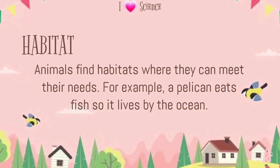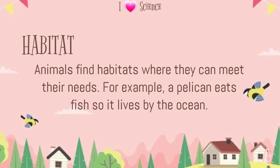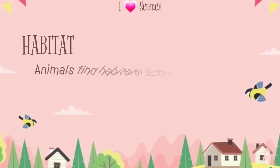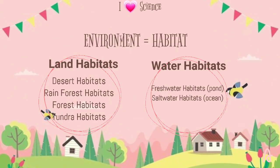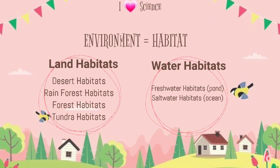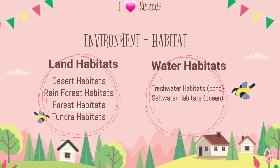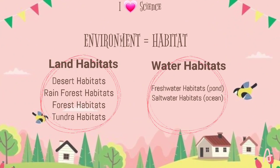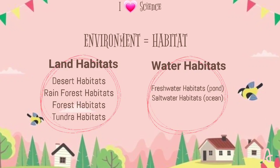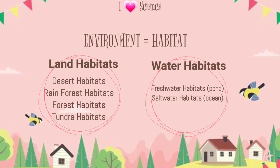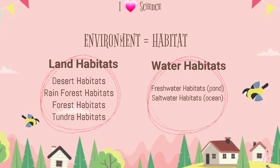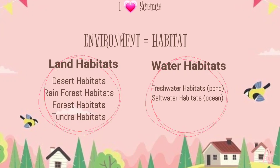For example, a pelican eats fish so it lives by the ocean. An environment may have many different habitats. In a forest environment, for example, part of the forest may be the habitat of a bear. One tree in the forest may be the habitat of a wasp.